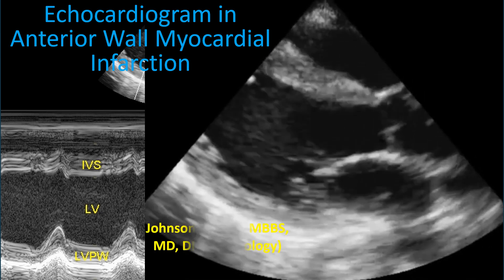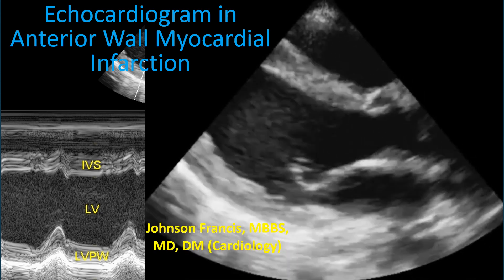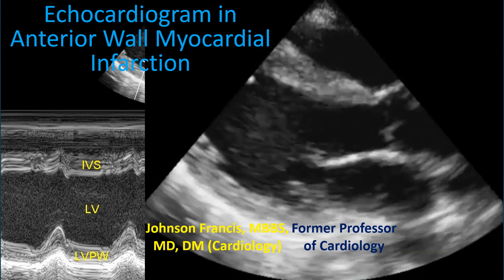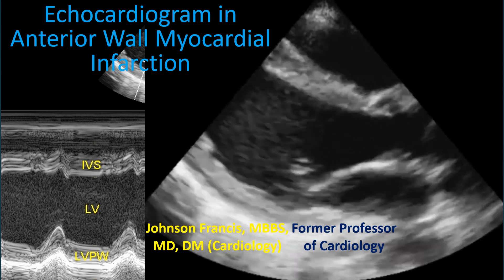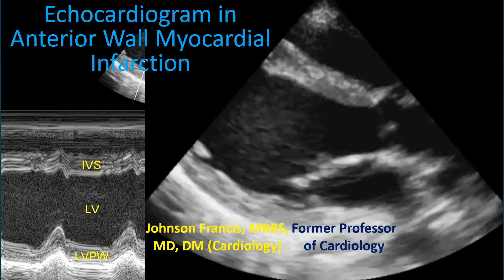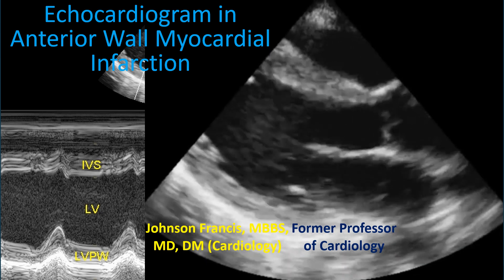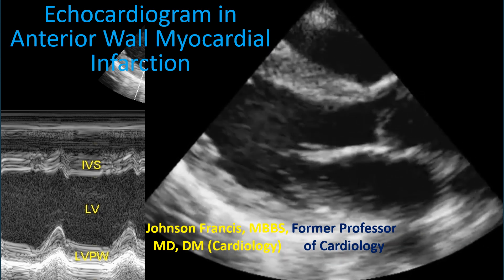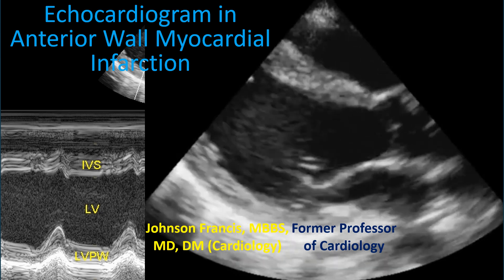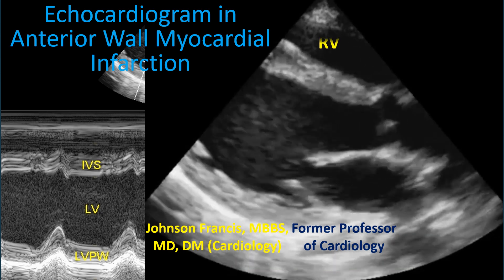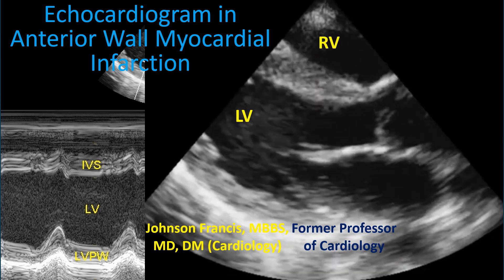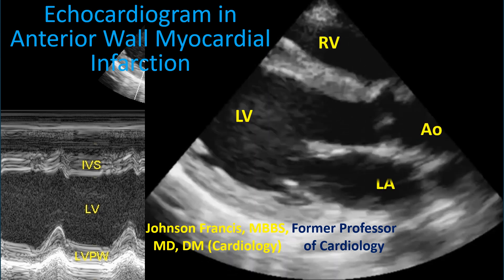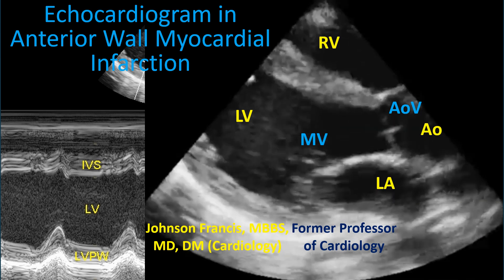Echocardiogram in anteroseptal myocardial infarction. The left panel shows M-mode echocardiogram while the right panel shows 2-dimensional echocardiogram in the parasternal long axis view, showing right and left ventricles, aorta, left atrium, and aortic and mitral valves.